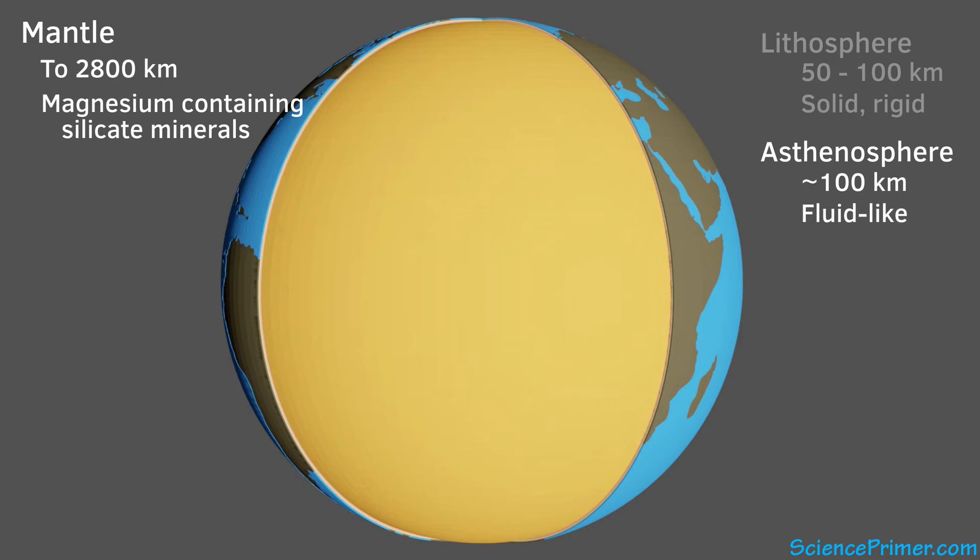Below this thin layer, the pressure increases enough so that even though it's still very hot, the mantle takes on a more solid, plastic-like consistency.